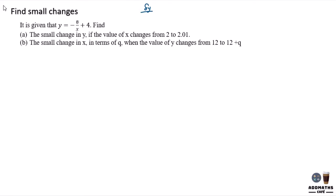Find small change. Small change means delta of the variable. So delta y means small change of y, and delta x means small change of x. The formula will be delta y over delta x equal to dy/dx.